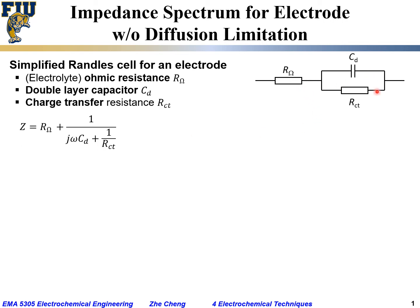Using what we learned before, for these three elements combined, the impedance is just R_ohm plus the impedance for the parallel combination of R_ct and C_dl. We can write it as R_ohm plus one over the sum of (one over R_ct) and (j·ω·C_dl). The capacitor impedance is 1/(j·ω·C_dl), so this is the overall impedance for a capacitor and resistor in parallel.